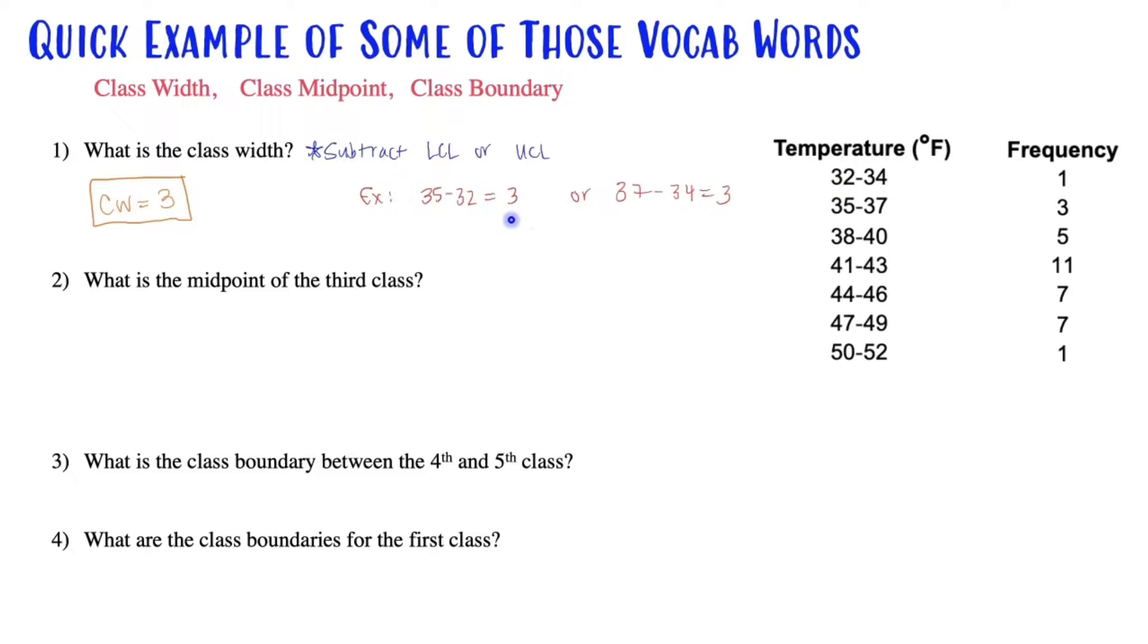You either subtract two consecutive lower class limits, or you subtract two consecutive upper class limits. For example, we could do 35 minus 32, which gives us 3. I always like to double check my math, so I would do another example. What if I did 37 minus 34? That's also 3. So I've declared that the class width is 3.